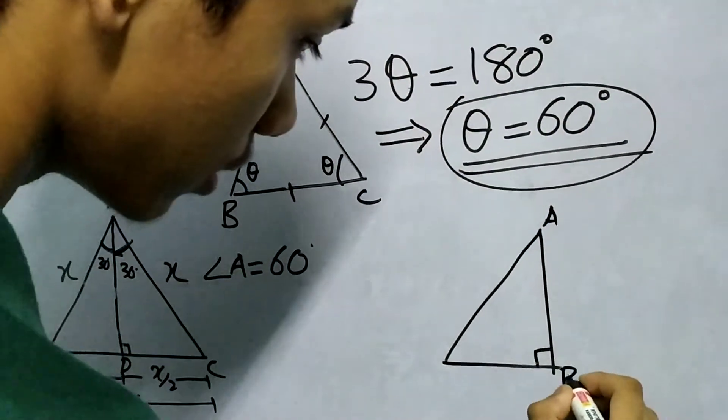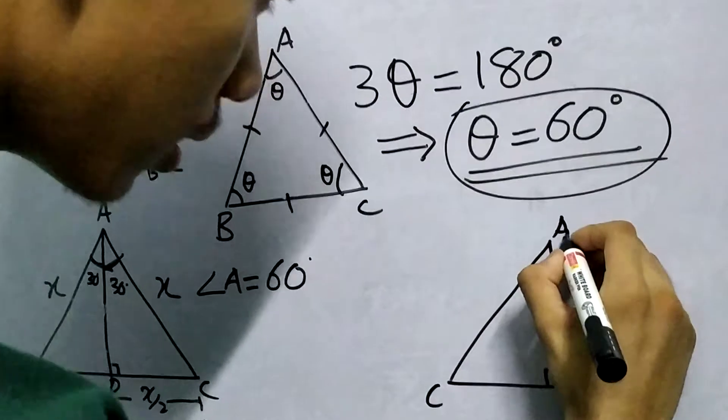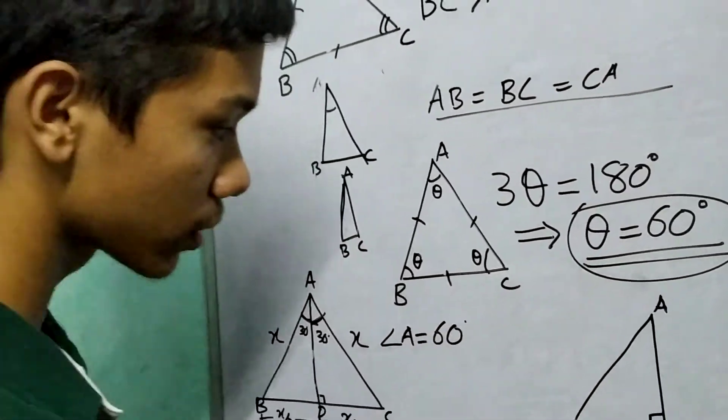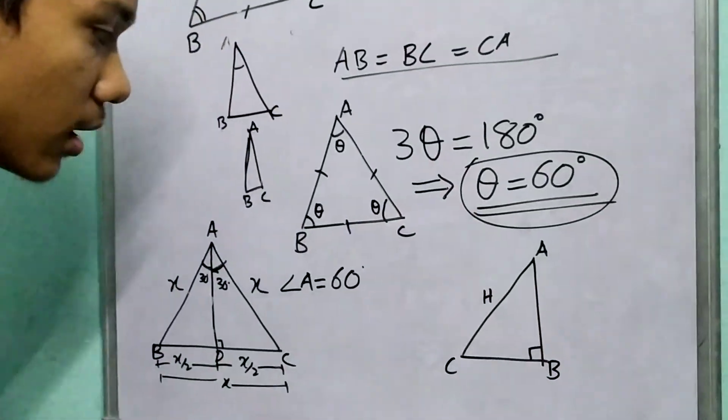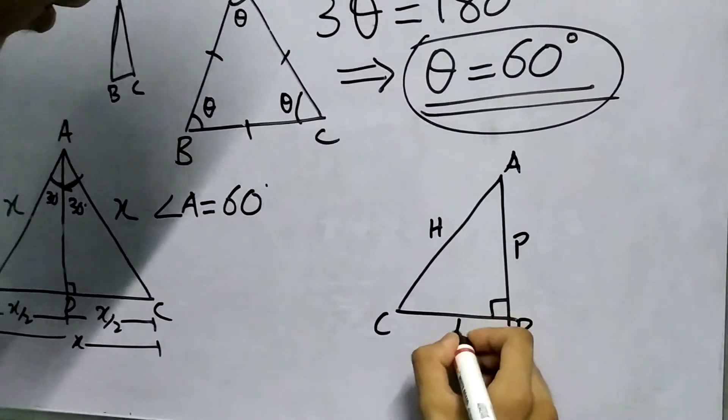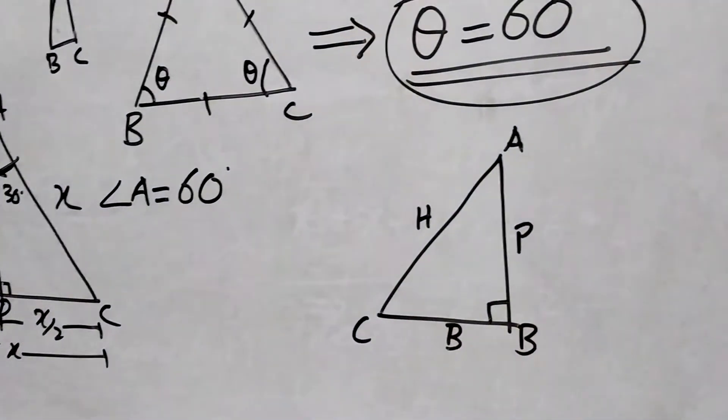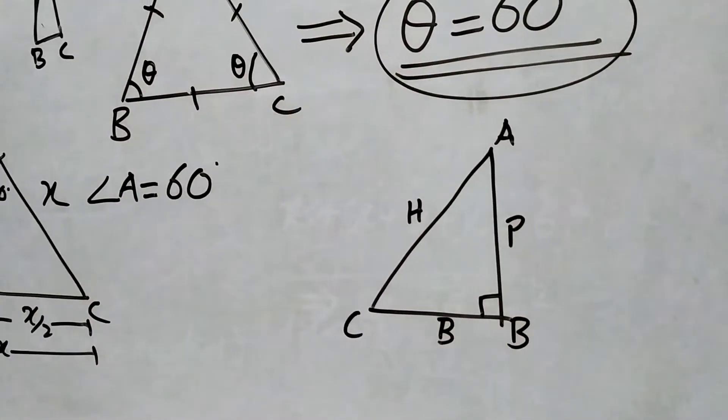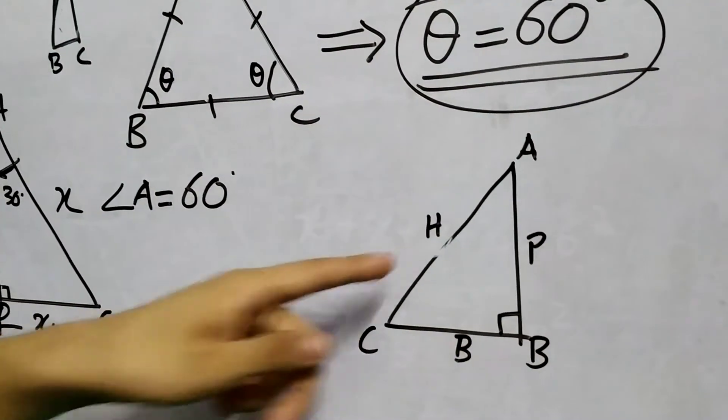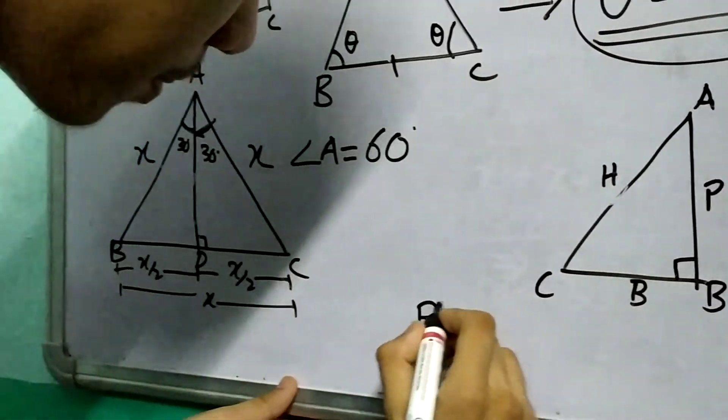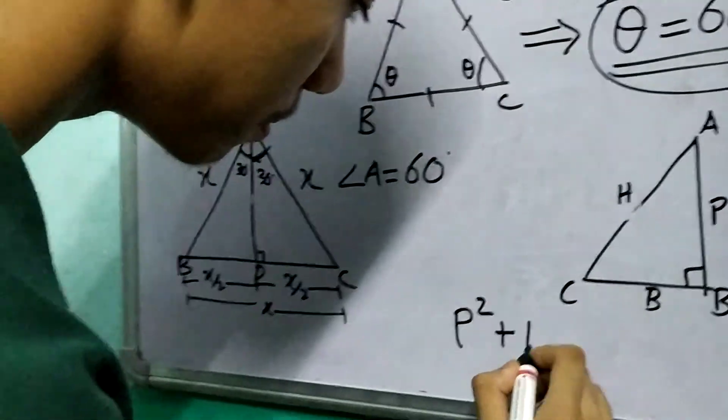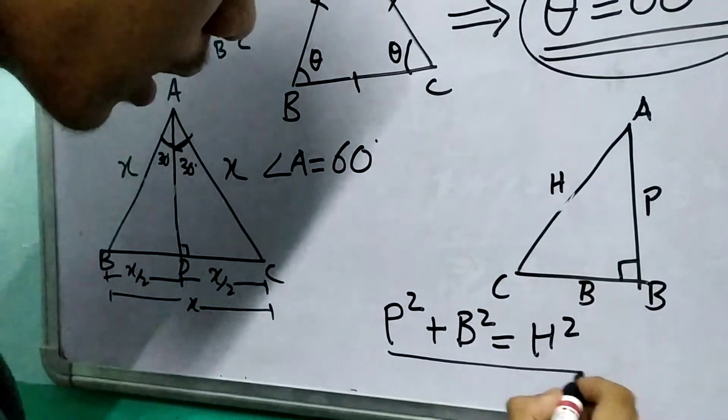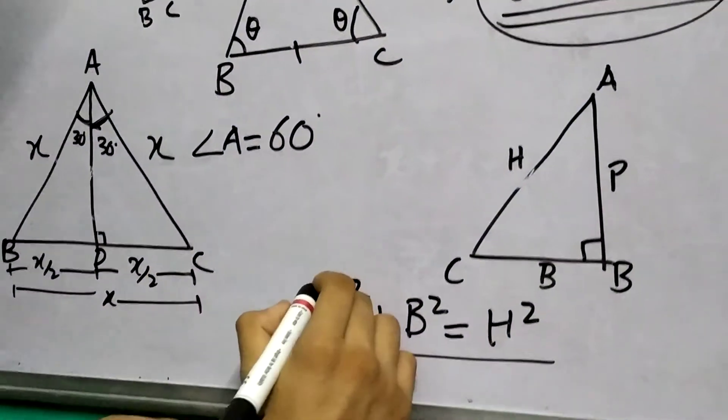Let us label this as ABC. The longest side of a right angle triangle is the hypotenuse, so we can label this as h. Let's call this the perpendicular side and this the base. The Pythagoras theorem states that if we square these two and add them, we will get the square of hypotenuse. So p² + b² = h².